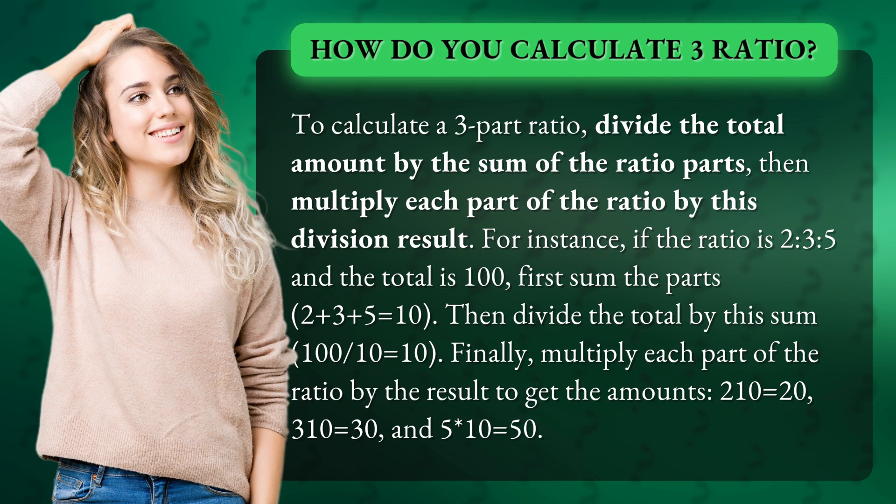Then divide the total by this sum: 100 divided by 10 equals 10. Finally, multiply each part of the ratio by the result to get the amounts: 2×10 equals 20, 3×10 equals 30, and 5×10 equals 50.